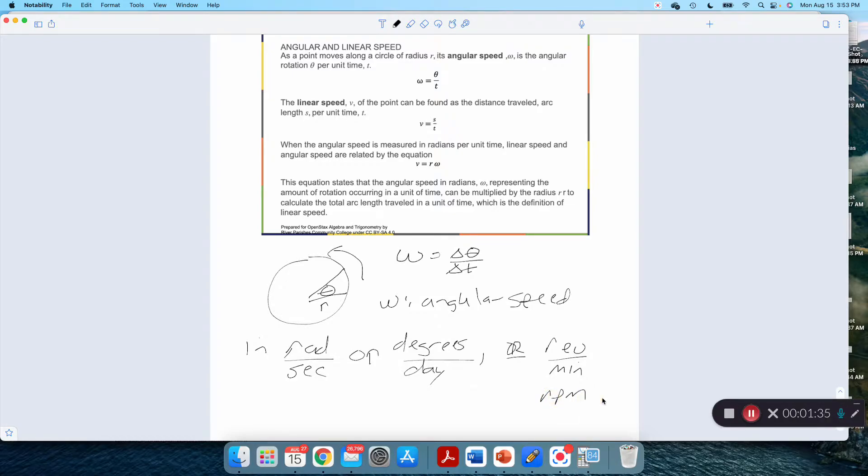If you look at the dials on your car, one of the dials you have is RPM. That's how quickly your engine is cycling, revolutions per minute. That's a measure of omega. It's how quickly something is cycling around.